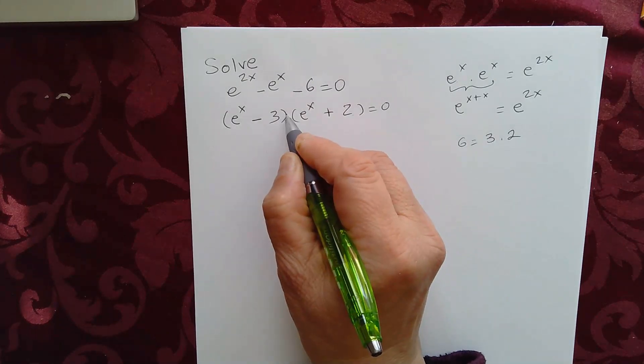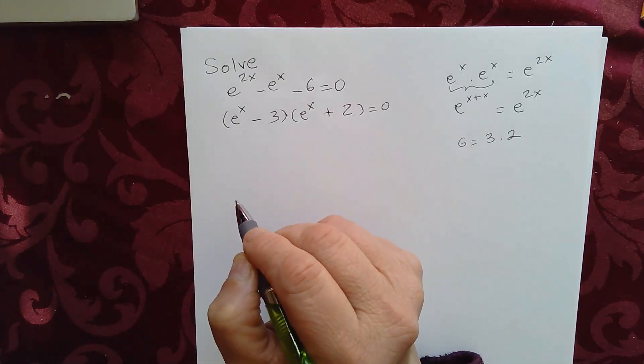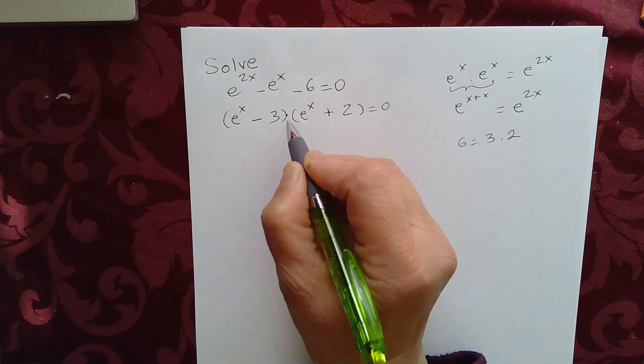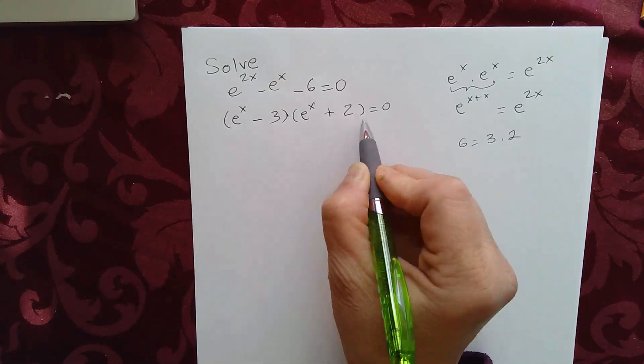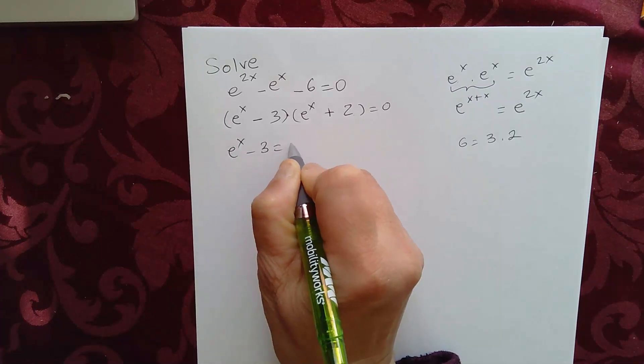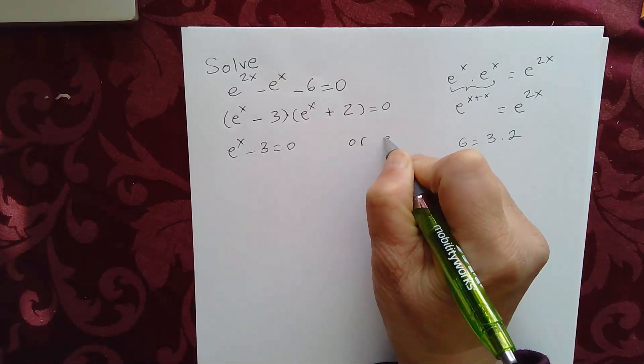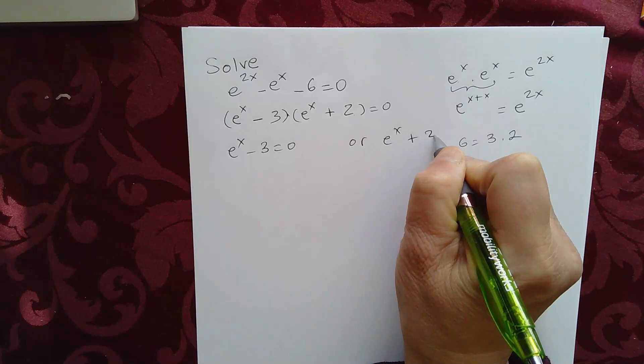Now solving this, you have a product that's equal to 0. That means either this is 0 or this is 0. So you have e to the x minus 3 equal to 0 or e to the x plus 2 equal to 0.